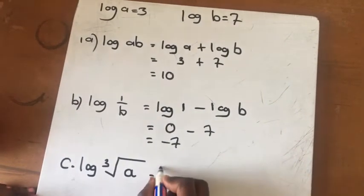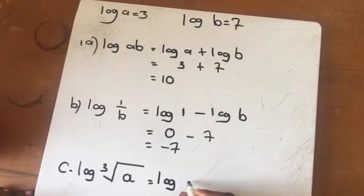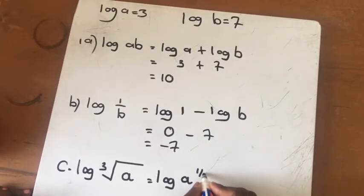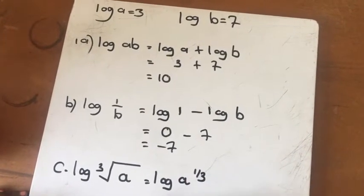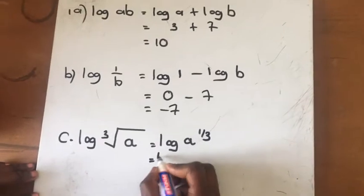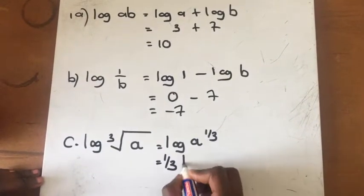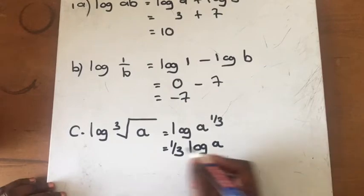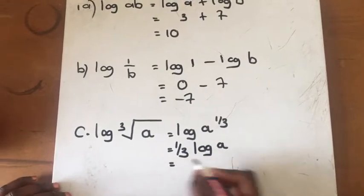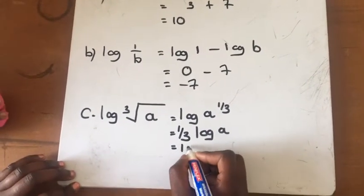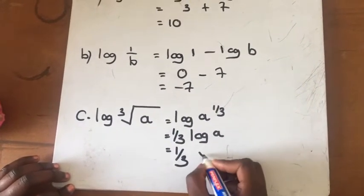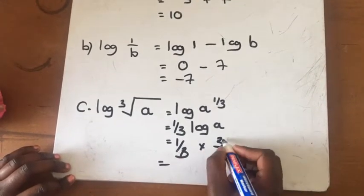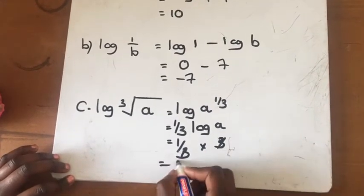Here I'm going to express it as log a to the power 1 third, then I'll say 1 third log a. Then I'm going to substitute: 1 over 3 multiplied by 3, and my answer will be 1.